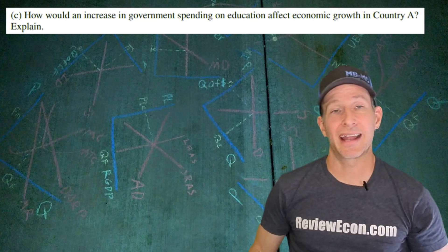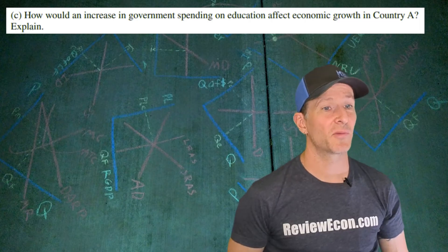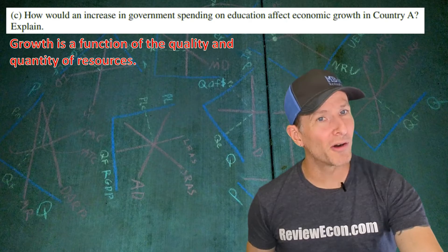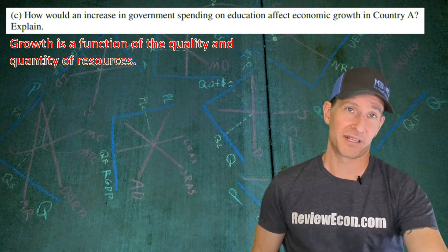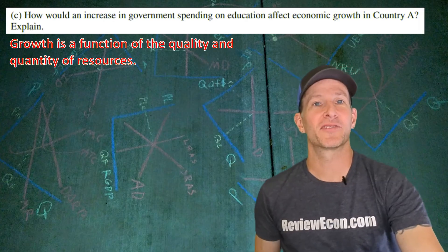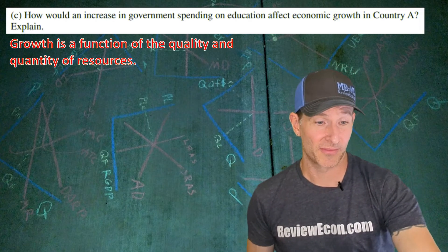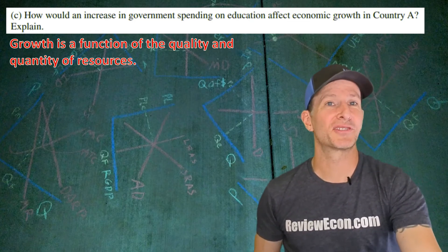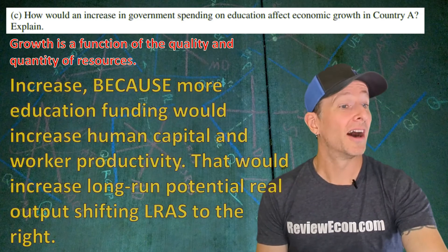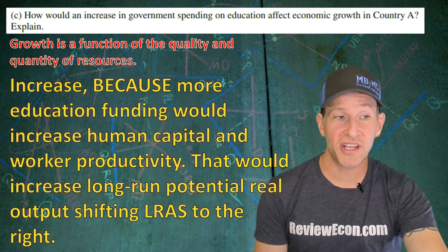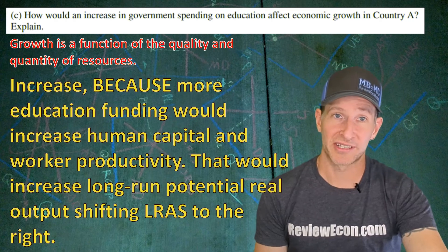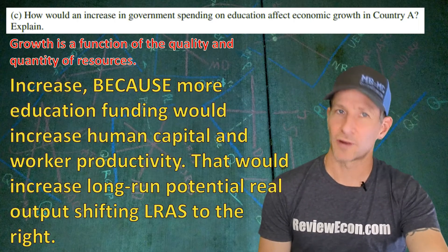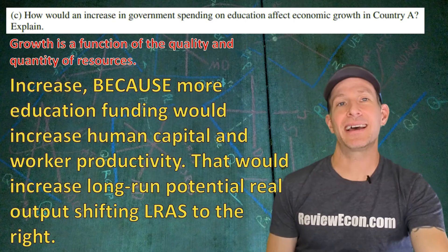For part C, we have to explain how an increase in government spending on education would affect economic growth in country A. Growth is a function of the quality and quantity of resources within a country. Increases in the quality or quantity of resources will increase growth. Government spending on education increases the human capital of the workforce — the skills and knowledge of the workforce — leading to an increase. More education would increase human capital and worker productivity, increasing long-run potential real output and shifting the long-run aggregate supply curve to the right.